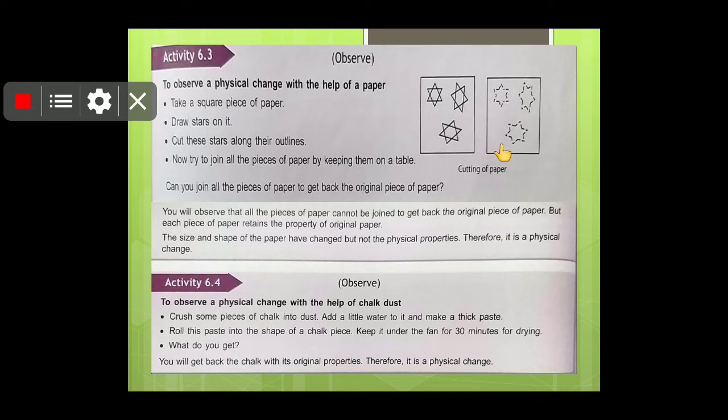Now students, as you can see that the paper is being cut. Take a paper, square paper and draw stars on it, and cut them. Now try to join all the pieces of the paper by keeping them on the table. For example, you can join all the pieces of the paper to get back the original piece of paper. Yes, you can join.